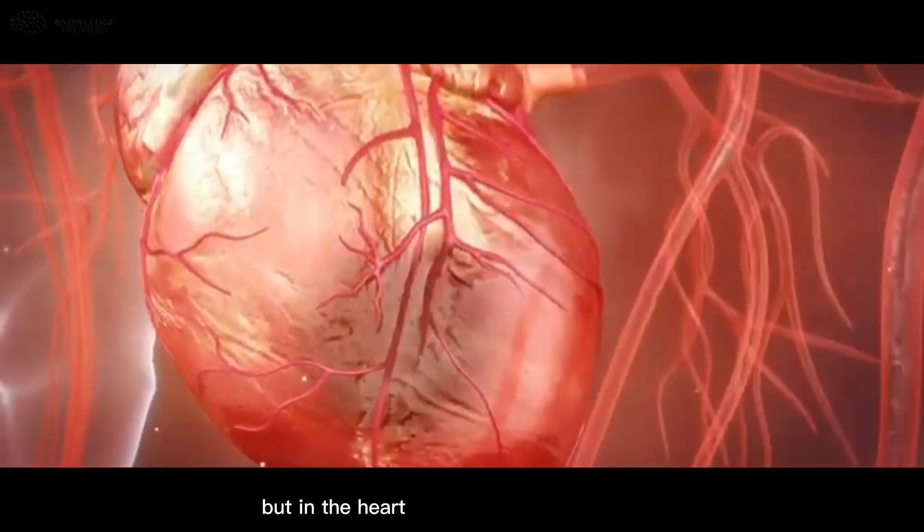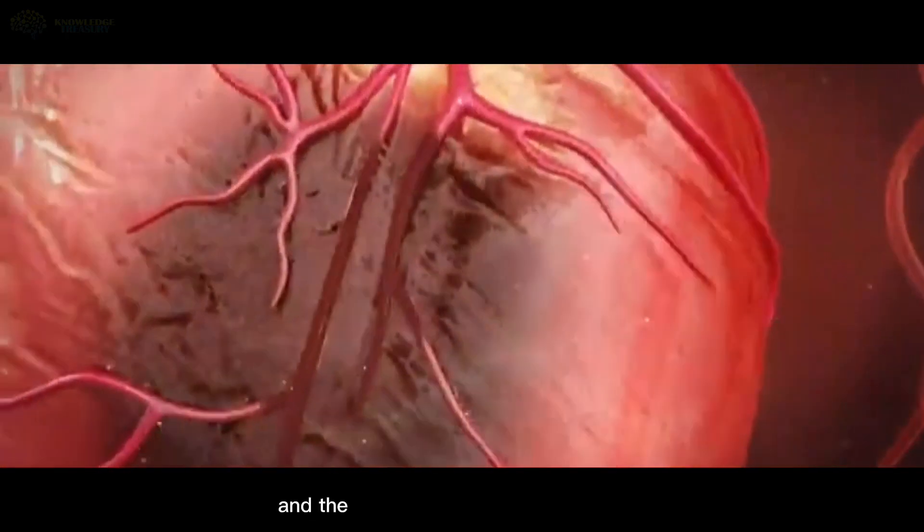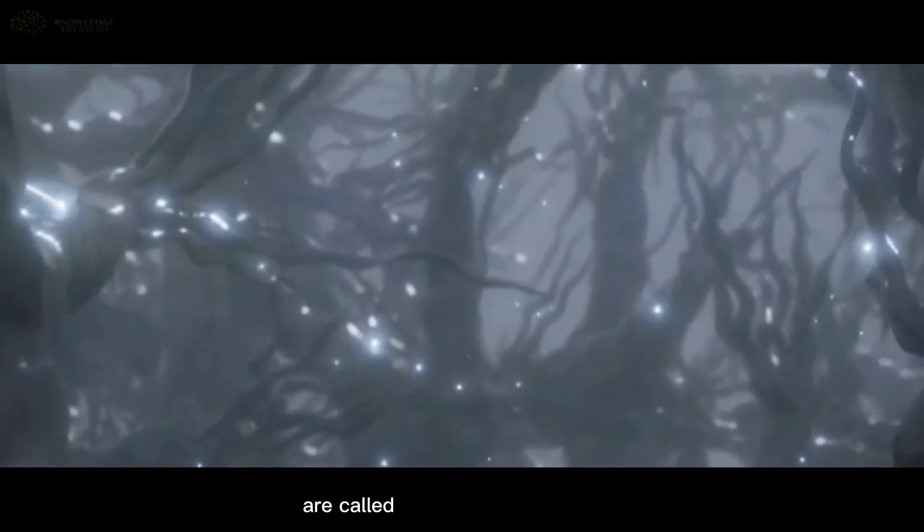It's brain-like cells, but in the heart and not in the brain, and the 40,000 specialized cells are called sensory neurites.